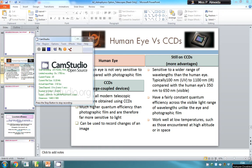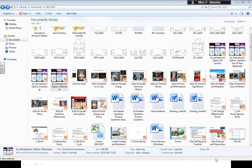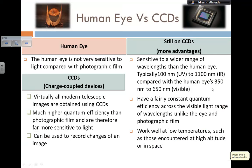Hello everyone. I'm going to be telling you about the human eye and compare it with CCDs, which are devices used in most modern telescopes. They are devices where you can capture and record images, even at different wavelengths.